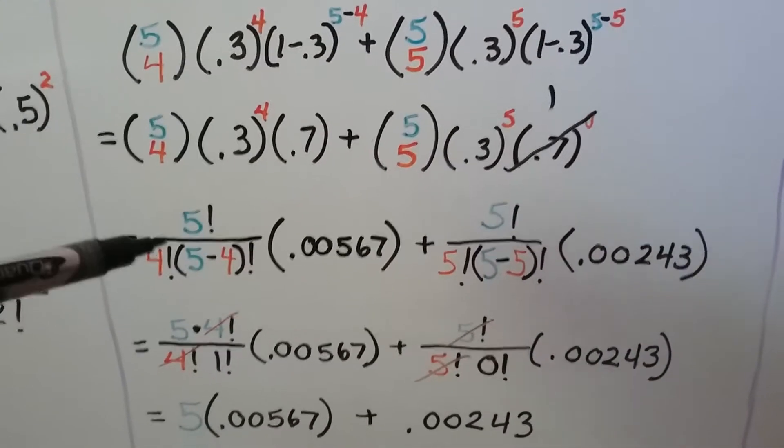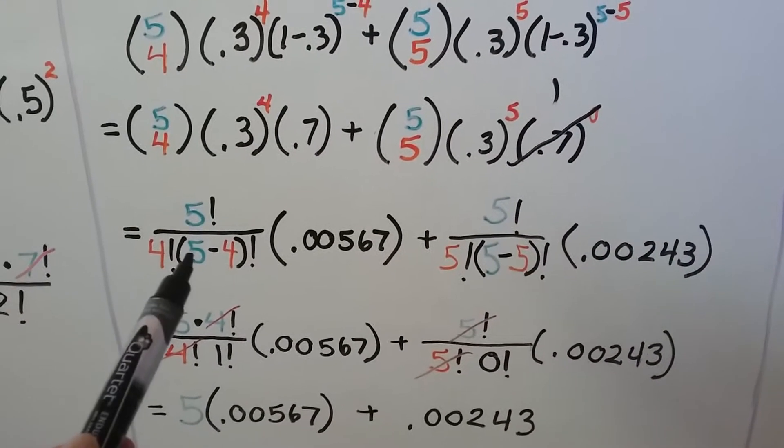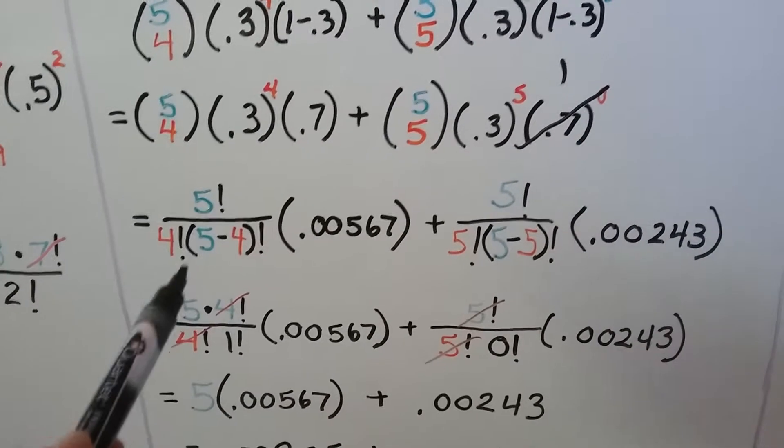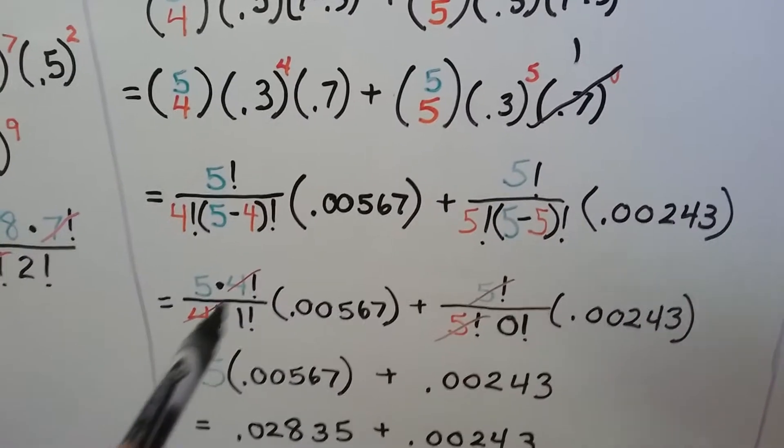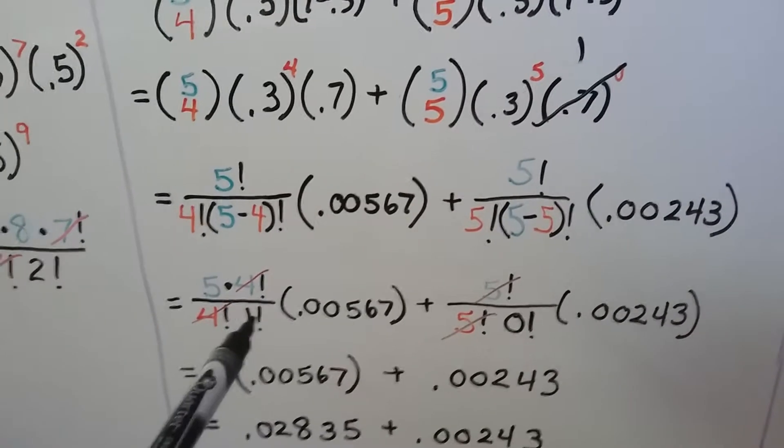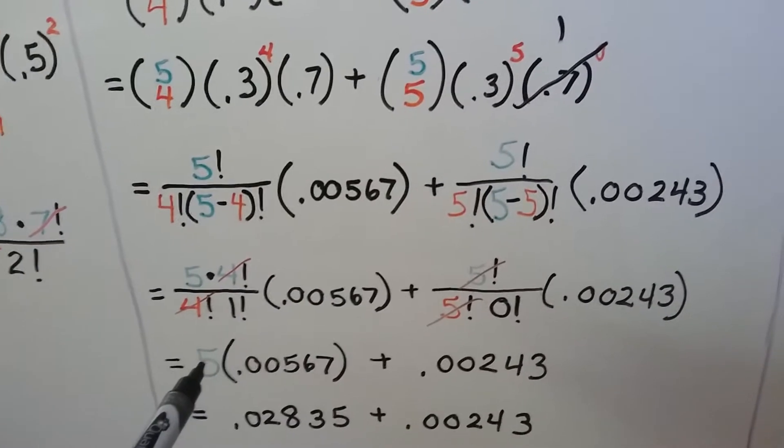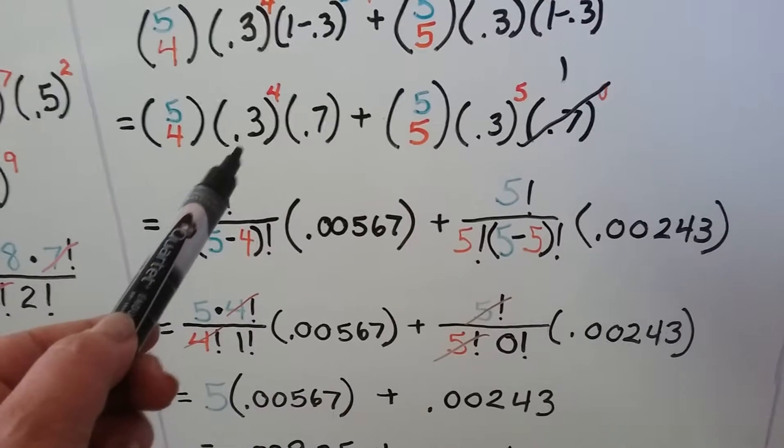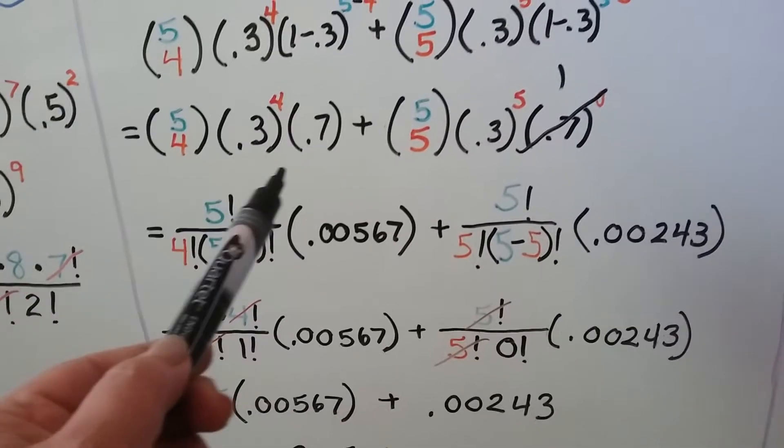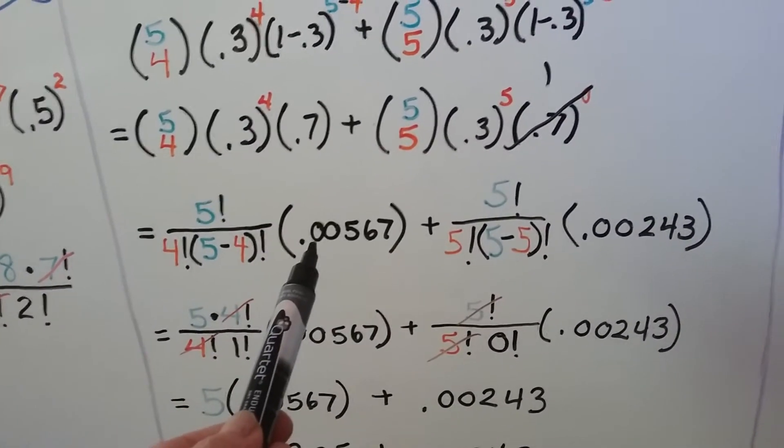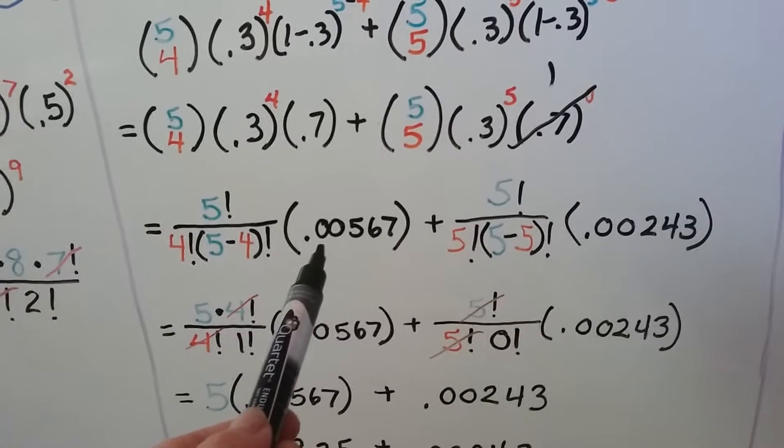We write our five choose four like this. Five minus four factorial is one factorial. We can write the five factorial with a factor of four factorial and cancel them out. So we have five over one, which is just a five. We've got 0.3 to the fourth power times 0.7. That gives us 0.00567.